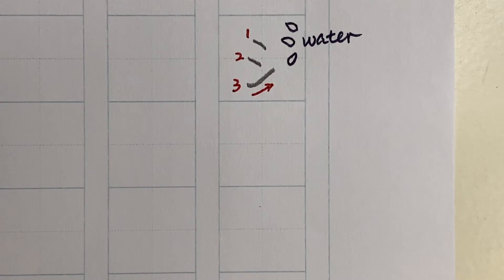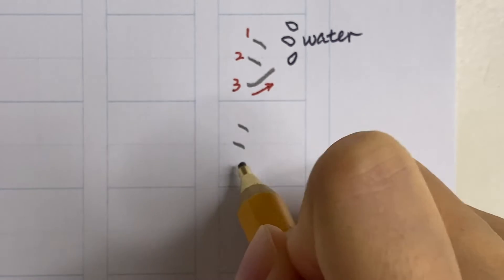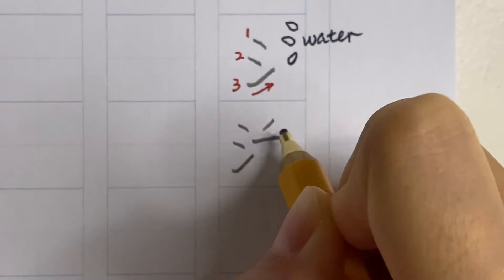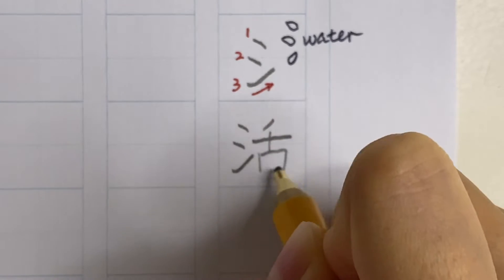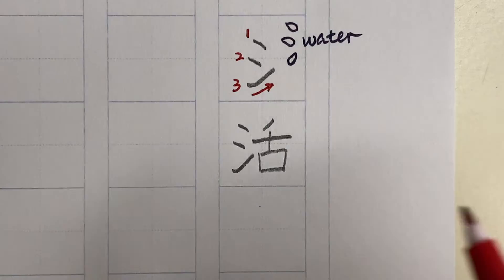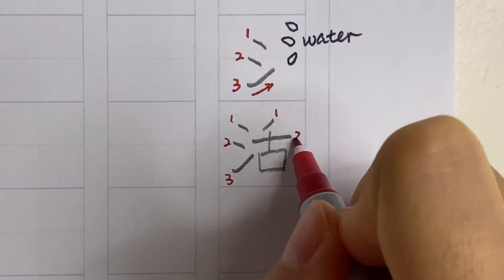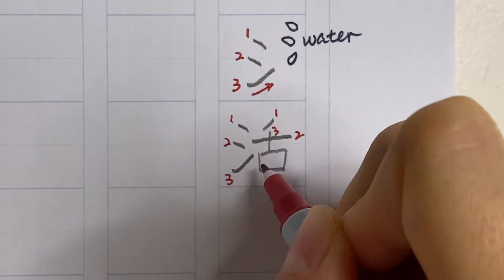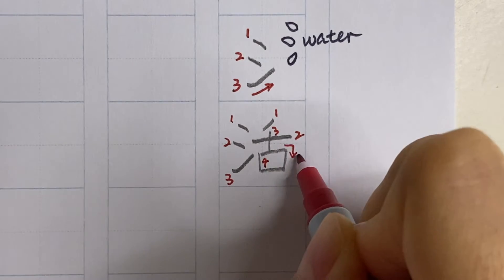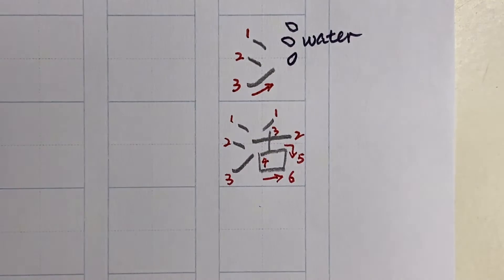Let's look at an example using this. This character or this kanji means life or lively, just like seikatsu. The katsu in seikatsu. And the sequence is always left to right and top to bottom. And when you draw the box, remember it's only three strokes.